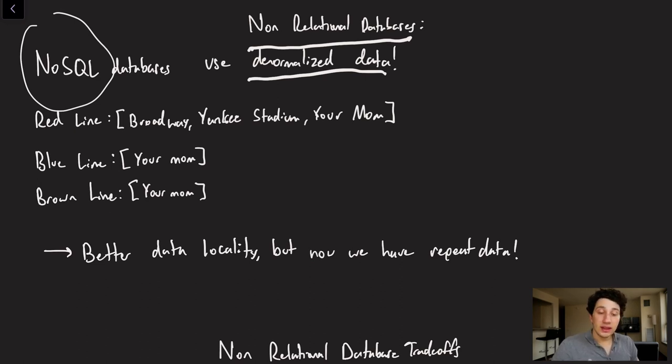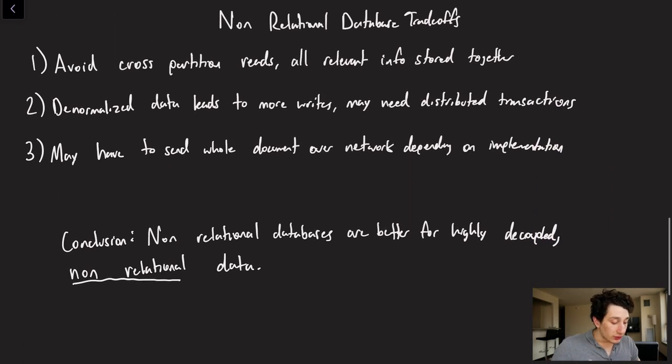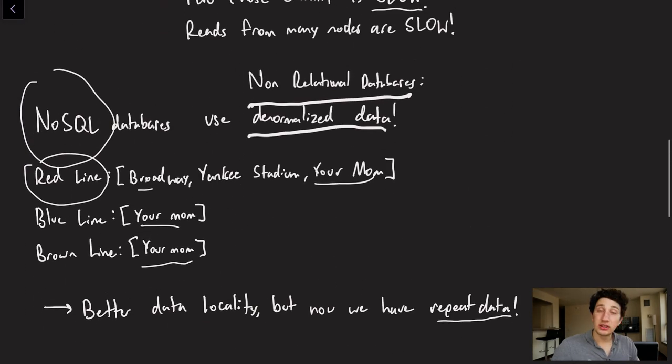So imagine that the keys were the train names - now all of a sudden the values are all of the stations. So you can see your mom is repeated for the red line, blue line, and brown line because it is a station that all three of those trains go to. So now we do have better data locality, but obviously that has to come at a cost, right? We have repeat data, and so what are the trade-offs of something like this? Well, for starters, we do avoid cross partition reads, right? Because let's say I wanted to know all of the stations that the red line stops at - it's all stored right together which is great.